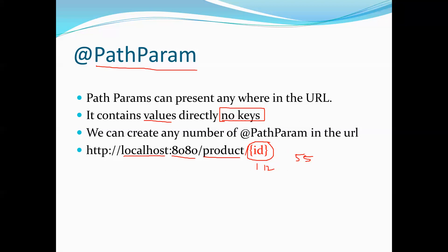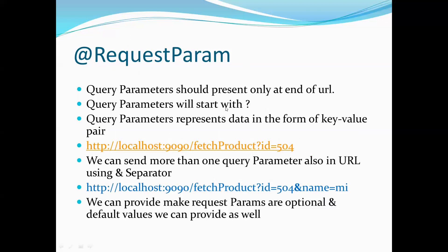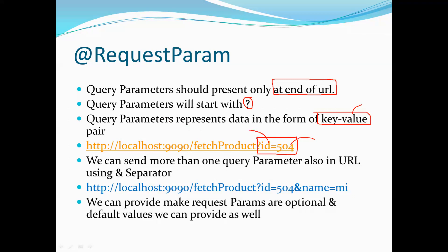We have another one called request param, which is also similar in that it's used to get data, but the way of representation is different and one more functionality is added. Request param is present at the end of the URL — path param can be used anywhere in the URL, but request param is specifically at the end. These request parameters start with a question mark, and we also call them query parameters. Query parameters are represented in the form of key-value pairs. For example: question mark, id equals 404 — here 'id' is your key and '404' is the value, so where id matches 404, you get the data from the database.